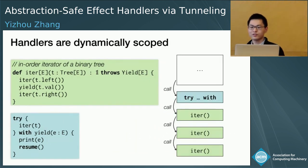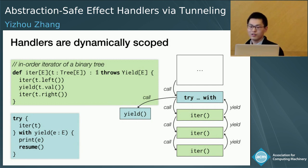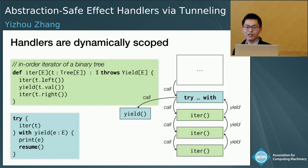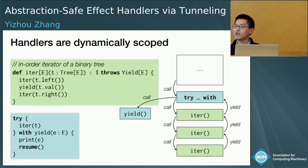Just like exception handlers, algebraic effect handlers are dynamically scoped. This means that when the yield effect is raised, the runtime searches the dynamic context for the most recent handler that can handle yield, and transfers control to that handler. After the handler prints the element, control is transferred back to where the yield effect was raised, so the iterator continues to traverse the right subtree. This is the current operational semantics for algebraic effects.